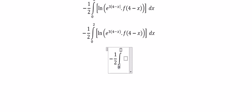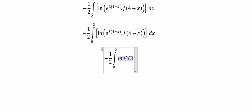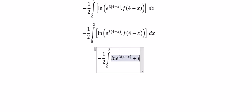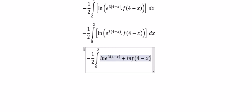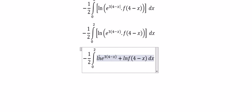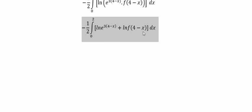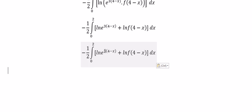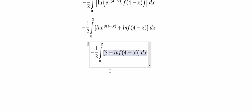Next, we have ln of a product, so you get ln(a) plus ln(b). That gives us ln(4) minus ln(5). Since we have 3 multiplied by (4 minus ln(5)), we still need to use the negative sign in here.